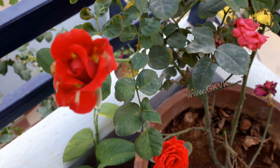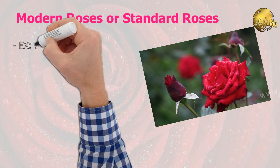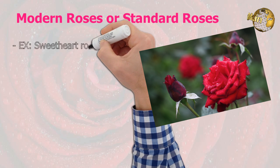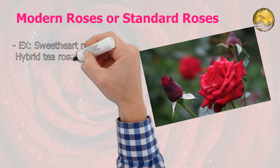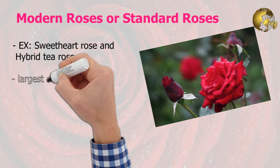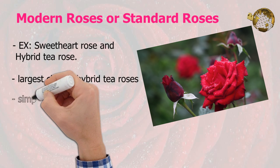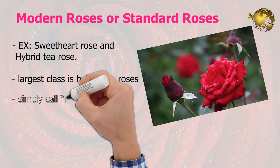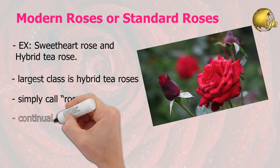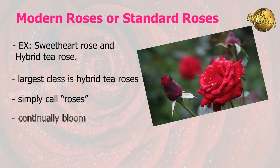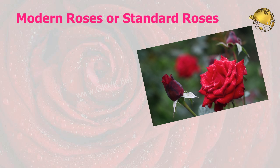Now we will discuss the Modern Roses or Standard Roses, e.g. the Sweetheart Rose and the Hybrid Tea Rose. These are the species that most people imagine when you think of a rose. The largest class of these is Hybrid Tea Roses, and what the cut flower industry will simply call roses. These are roses that will continually bloom, unlike most Old Garden Roses or Desi Roses that only bloom once per season.